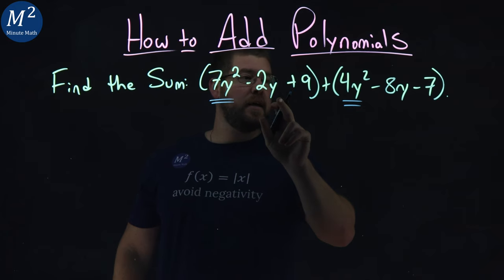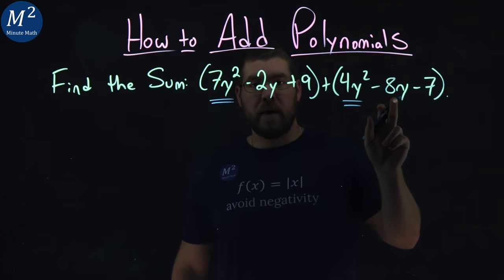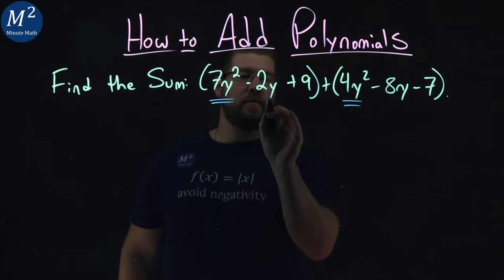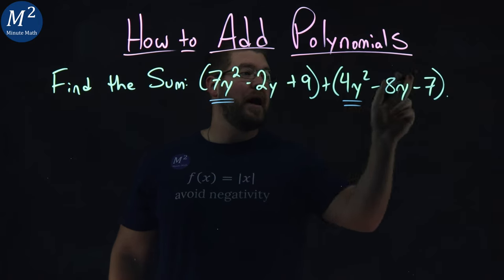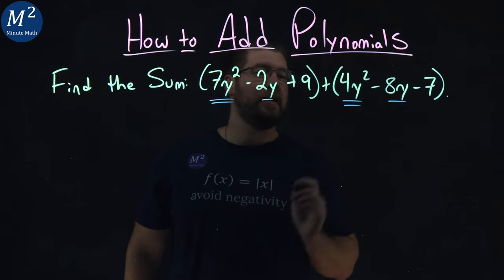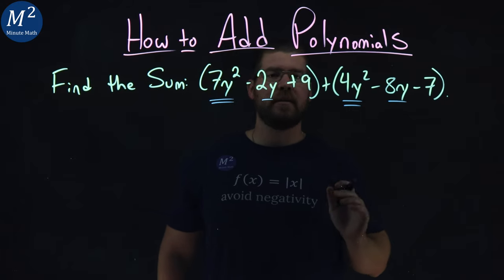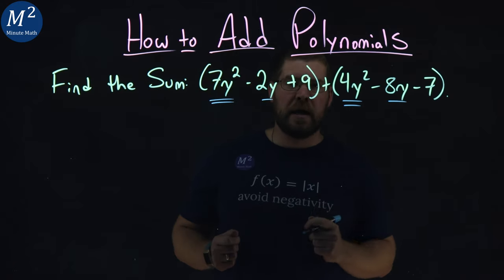Now I have a 2y here and an 8y here as well. They are also like terms, so let's put one line underneath them. And lastly, we just have 9 and 7, no variable, no lines.